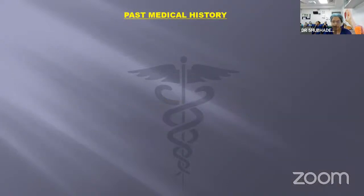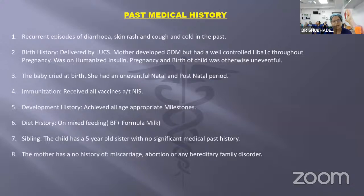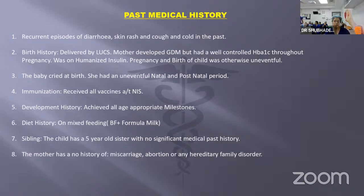Past medical history: recurrent episodes of diarrhea, skin rash, cold and cough in the past, resolving with home treatment. Delivered by caesarean section. Mother had GDM, well-controlled on insulin throughout pregnancy. Pregnancy and birth were uneventful. Baby cried at birth; natal and postnatal period was uneventful. Fully immunized, development age-appropriate, on mixed feeding. A five-year-old sister with no significant medical history. No consanguinity or hereditary family disorder.